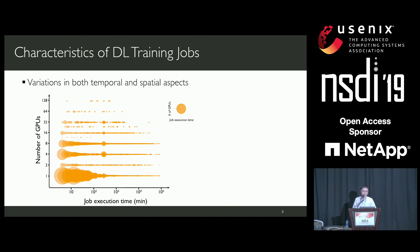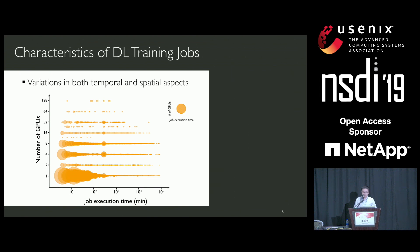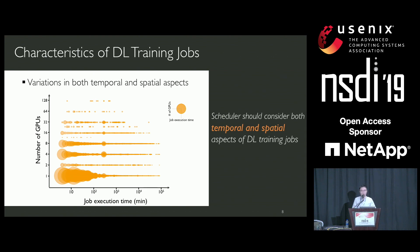In the temporal aspect, deep learning jobs can be executed for just several minutes or even weeks. The same variation happens in the spatial aspect—their GPU requirement. Even for jobs with the same GPU requirement, there is still huge variation in execution time. Because of this, the scheduler we design should consider both the temporal and spatial aspects of deep learning training jobs.